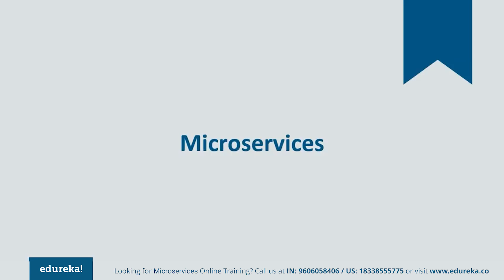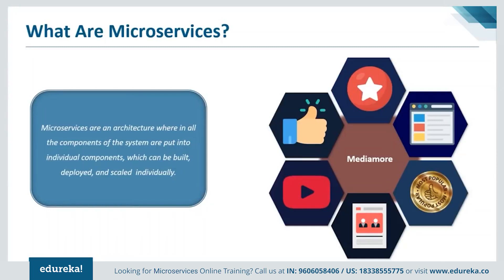So here is the million dollar question: what are microservices? Microservices is an architecture wherein all the components of the system are put into individual components which can be built, deployed, and scaled individually, meaning each component is independent of each other. Let me explain with a simple analogy. You must have seen how bees build their honeycomb by aligning hexagonal wax cells. They initially start with a small section and continue to build a large beehive. These cells form a pattern resulting in a strong structure. Each cell is independent of each other but also correlated with the other cells, meaning damage to one cell does not damage the others.